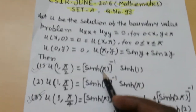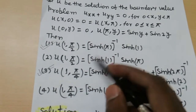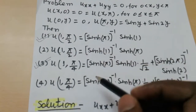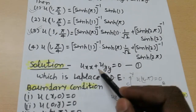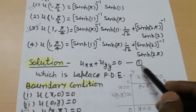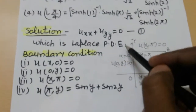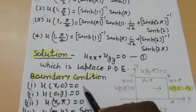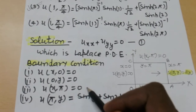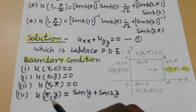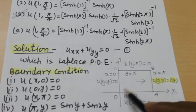Here the boundary conditions and four options are given. The boundary conditions are: u(x,0) = 0, u(0,y) = 0, u(x,π) = 0, and u(π,y) = sin y + sin 2y.